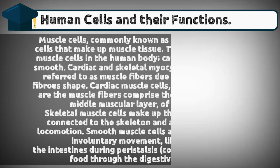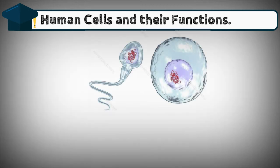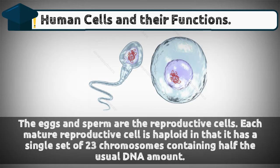Reproductive cells — eggs and sperm — are the reproductive cells. Each mature reproductive cell is haploid, meaning it has a single set of 23 chromosomes containing half the usual DNA amount.